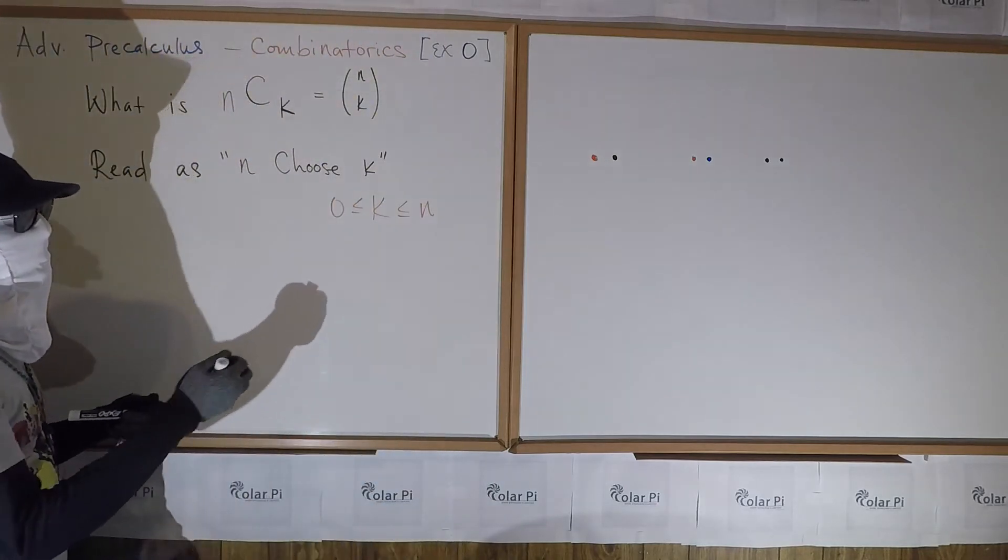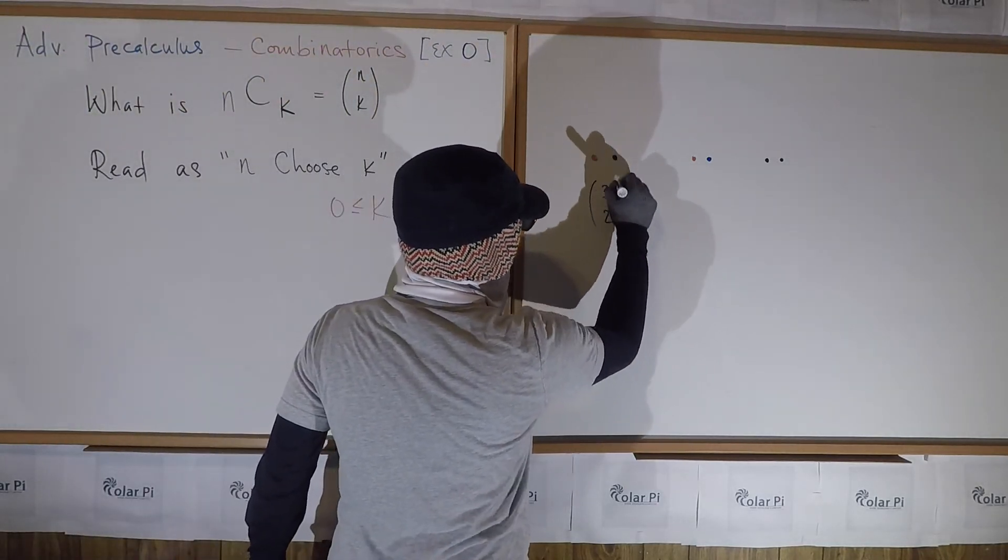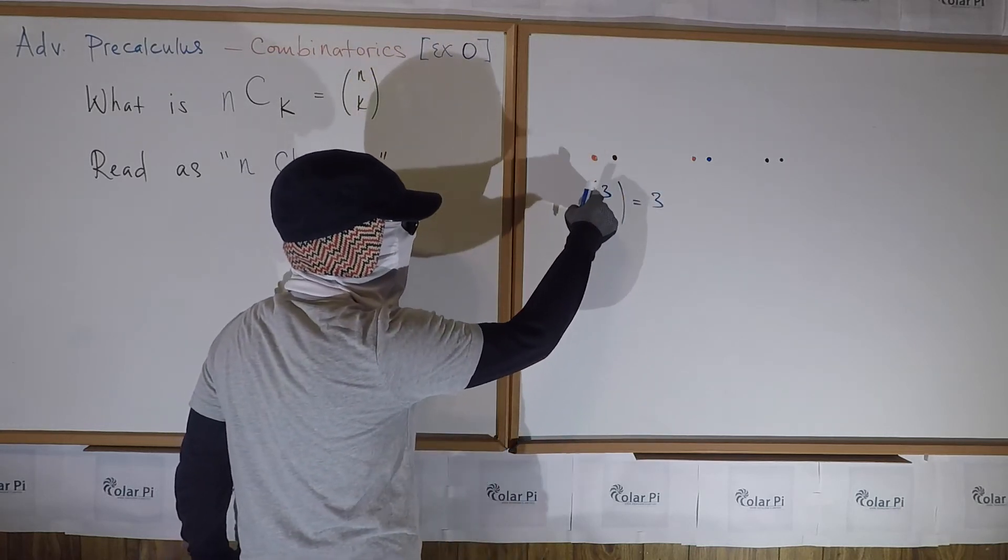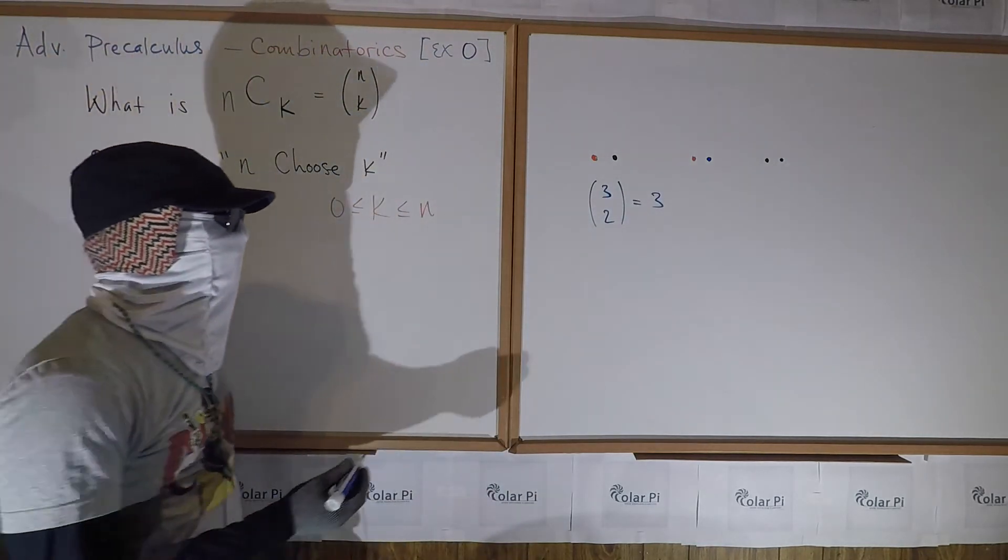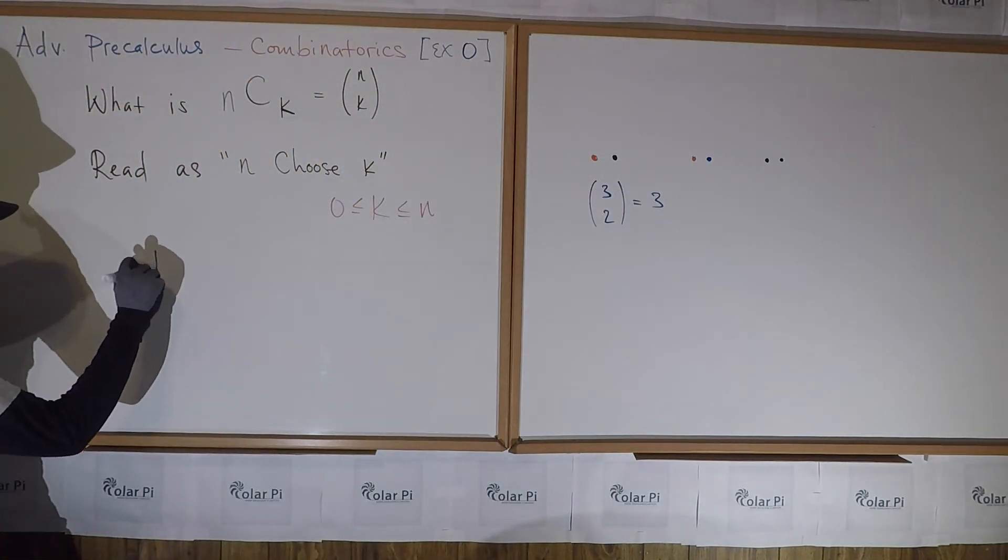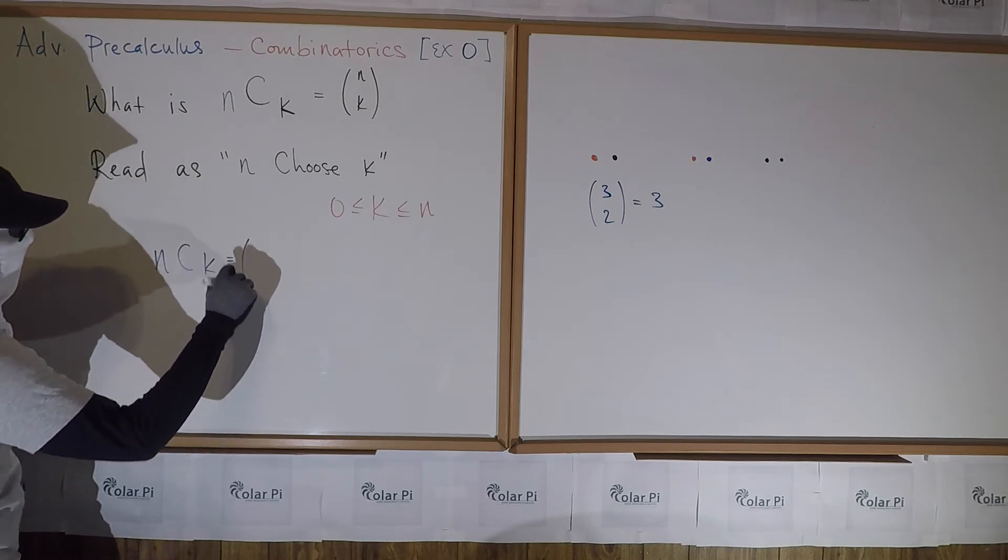Order doesn't matter - you're just trying to figure out how to pick 2 at a time from 3 things. So what we'd say in this case, seeing the result, is that 3 choose 2 is equal to 3. The number of ways to choose 2 at a time from 3 things is 3. Okay, so let's use the formula.